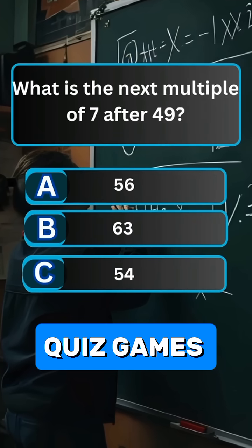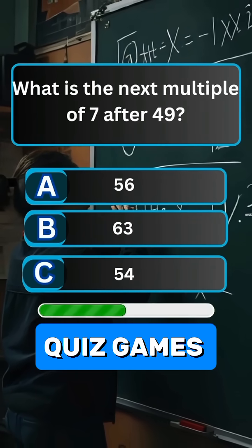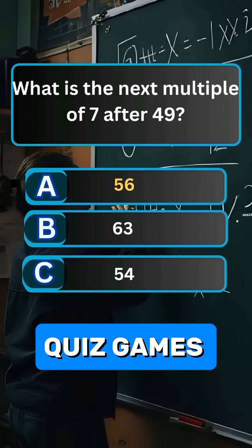Question 3. What is the next multiple of 7 after 49? Answer A. 56.